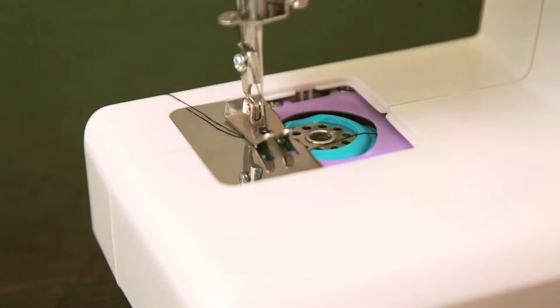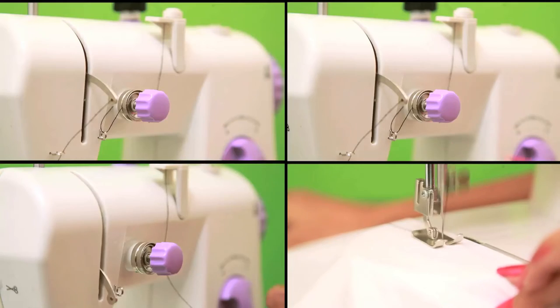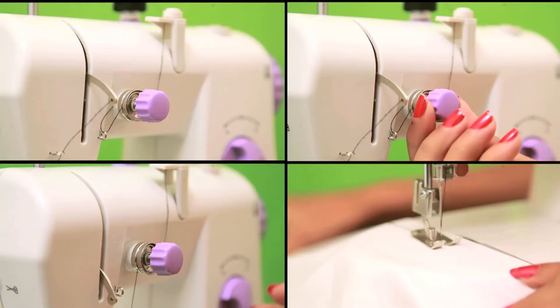Bobbin tension cannot be adjusted. So this is how you adjust your tension screw.